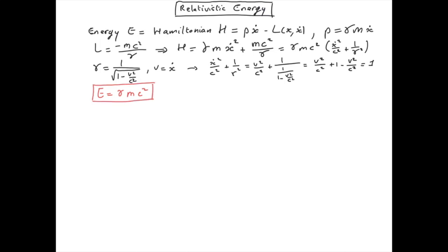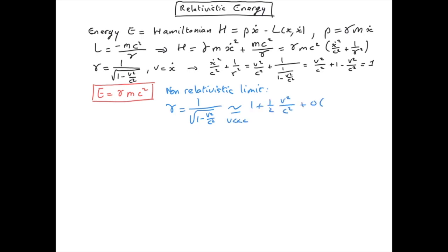It is always instructive to take non-relativistic limits. If we expand gamma in the limit where velocity v is much smaller than the speed of light c using a Taylor expansion, we get gamma approximately equal to 1 plus one-half of v² over c². Substituting this into the expression for relativistic energy, we find energy equal to mc² plus one-half mv² plus higher-order terms in v over c.